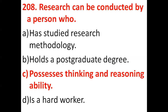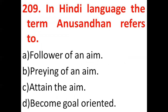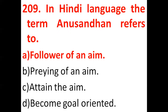Next question: in Hindi language, the term 'Anusandhan' refers to — options: follower of an aim, praying of an aim, attain the aim, and become goal oriented. Option A — follower of an aim — is the correct answer.